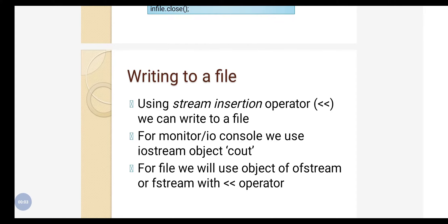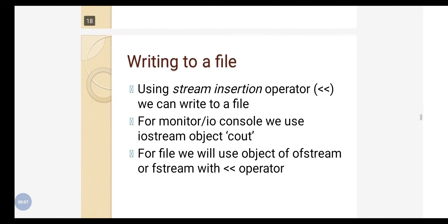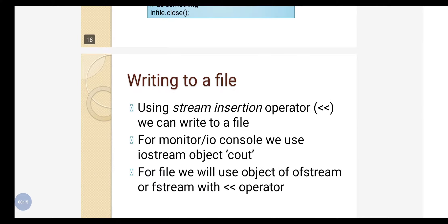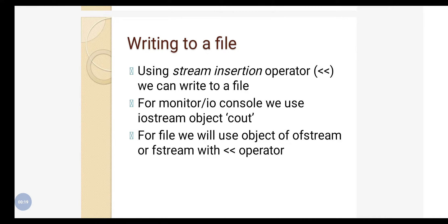In this part of the video we are going to see how we can write and read from a file. We have already seen how we can open and close a file using various stream classes. In order to write to a file, we need to use the stream insertion operator — the same operator used with cout. When writing to a file, you take the data from your program and insert it into the stream, and that data flows to the file.